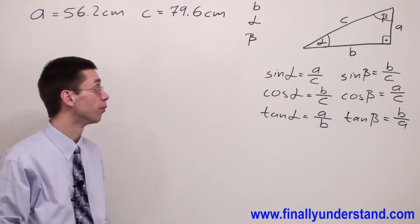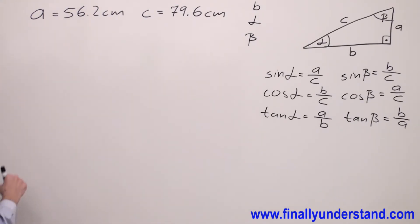Because two sides are given, I can find the third side, the length of the third side, by using the Pythagorean theorem. So always write the formula first. So we have a squared plus b squared is equal to c squared. If you want to find b, you're supposed to move a to the right side of the formula.